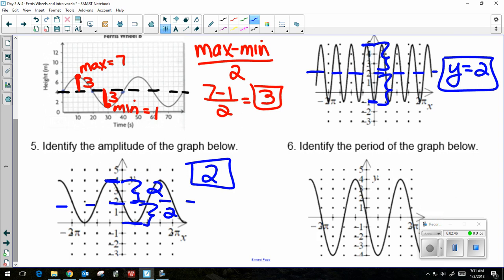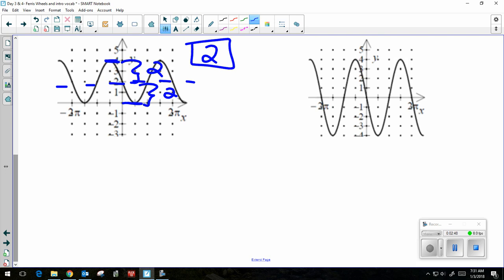Lastly, number six, identify the period once again. That's the amount of time it takes to see a full curve. There's my full curve before it starts repeating. That happens at 2 pi, so my period here is 2 pi.